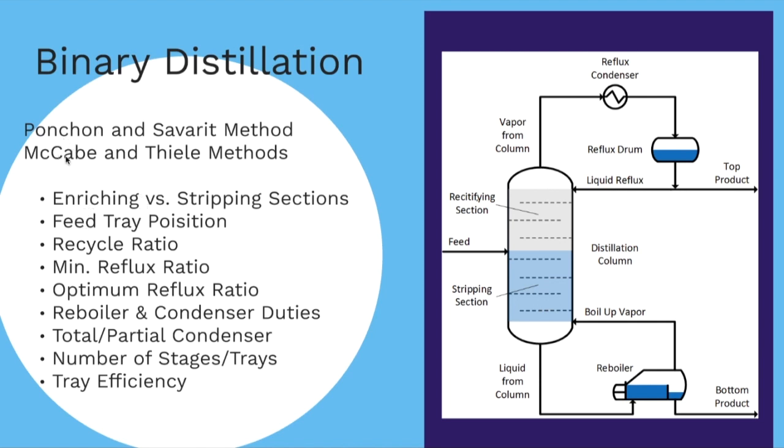The methods we use are either the Puncheon and Saberate method or the McCabe and Thiel method. I actually prefer the second one - it's easier to understand and it allows us to get the enriching and stripping sections.